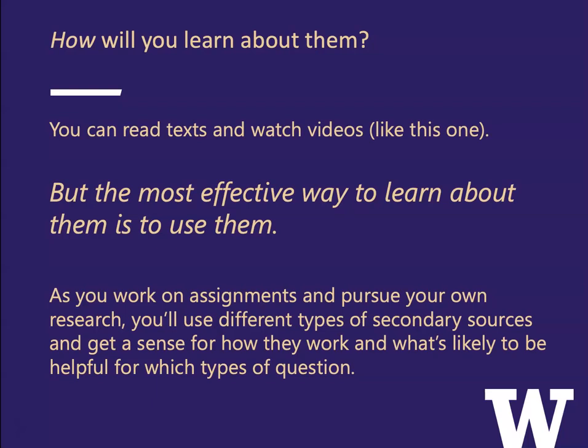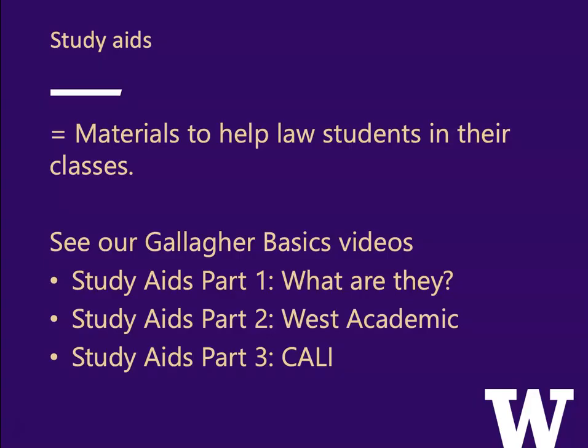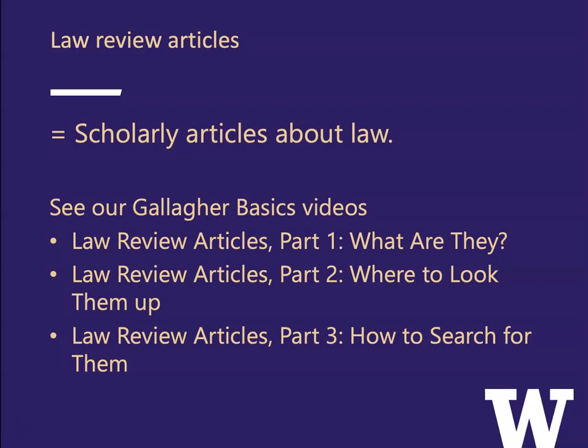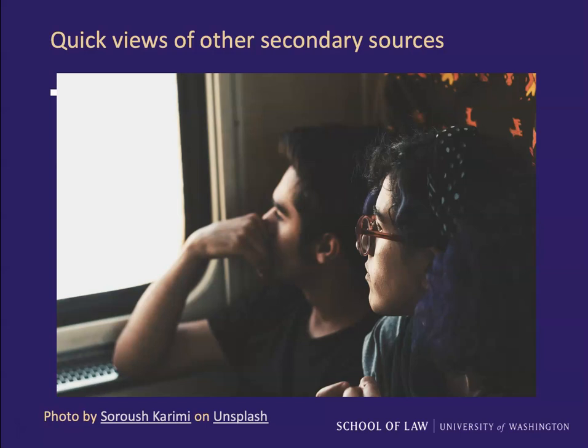You'll use different types of secondary sources, get a sense for how they work, and learn what's likely to be helpful for which type of question. Study aids are materials to help law students in their classes — we have separate videos about these: Study Aids Part One (what are they), Part Two (West Academic), and Part Three (CALI). Law review articles are scholarly articles about law — we also have separate videos about law reviews: Part One (what are they), Part Two (where to look them up), and Part Three (how to search for them).